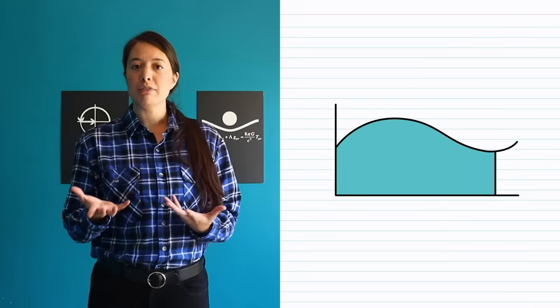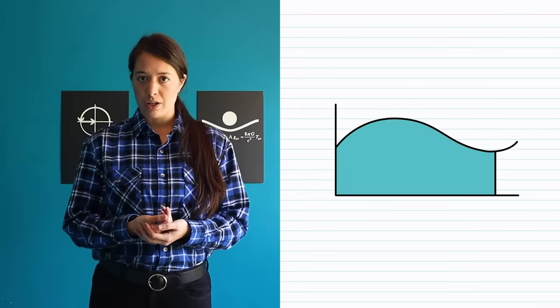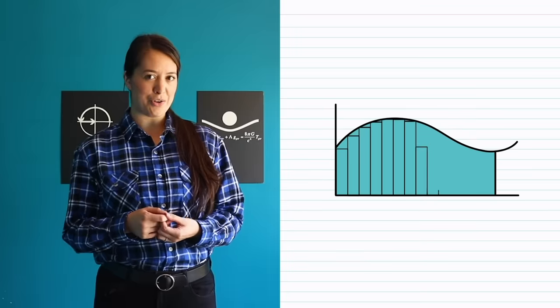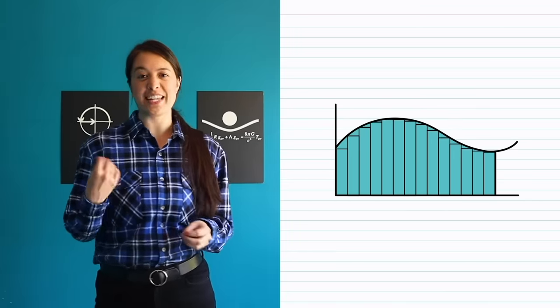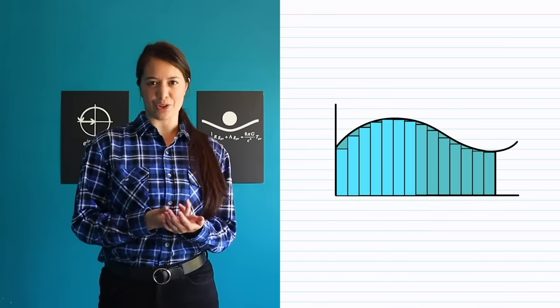So for example, if you want to find the area under a curve, you might start with an approximation. Maybe you draw a bunch of rectangles under the curve. All we have to do to find our area estimate is add together the areas of the rectangles we've drawn.